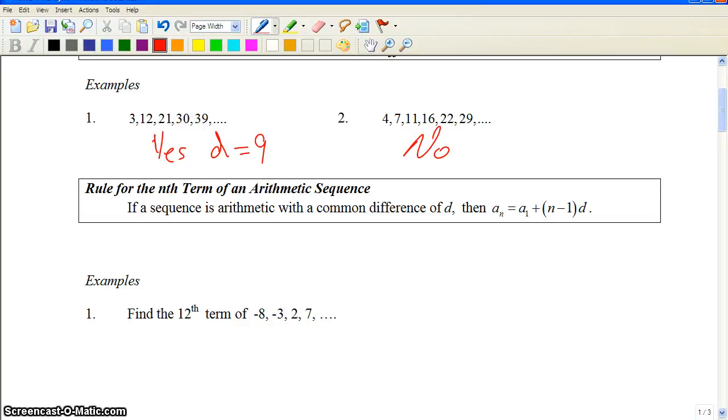We have a closed form of an arithmetic sequence, and this is the equation that comes from an arithmetic sequence. This is called the closed form of arithmetic sequence. From this, we can generate any of the terms within that sequence.